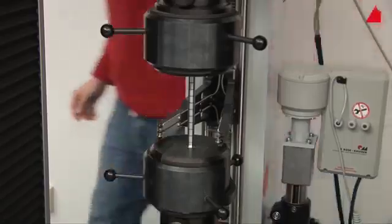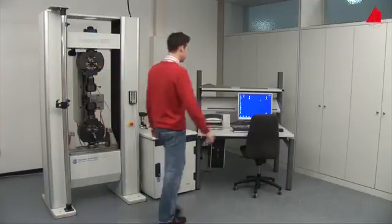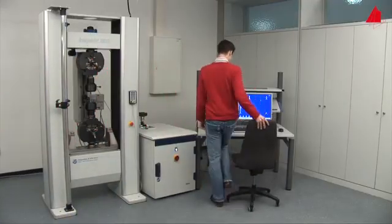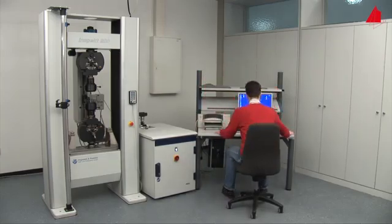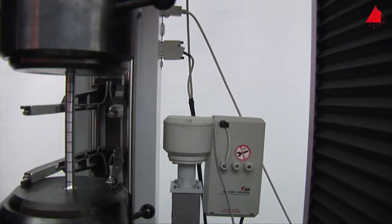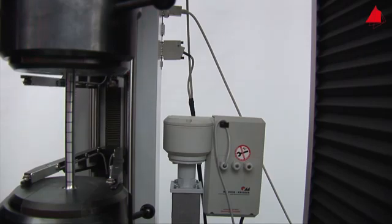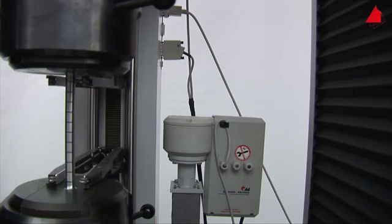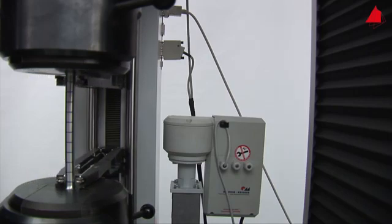Then he selects all necessary testing parameters on the control computer. Ready. The test starts and the extensometer sensor arms are carefully pressed onto the test piece. This way the gauge length can be measured throughout the whole tensile test.